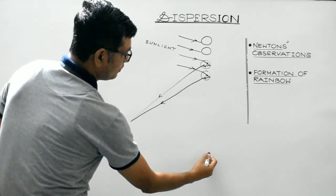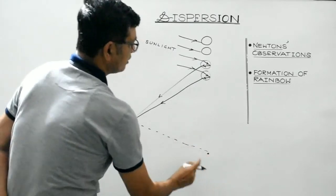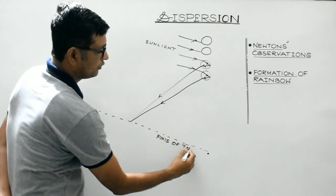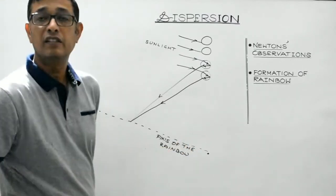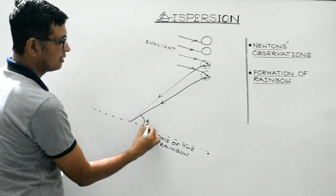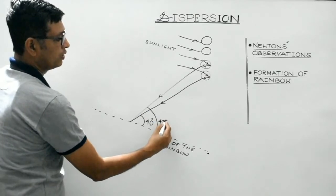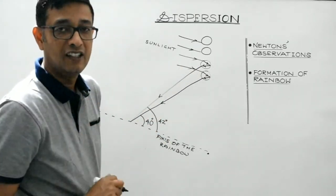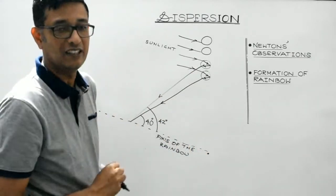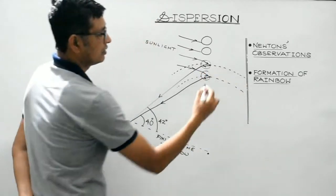This is the common centre of the rainbow, and this is the observer's eye. The line joining the common centre and the observer's eye with the sun is known as the axis of the rainbow. It is experimentally found that for the primary rainbow to be seen, the angle which the light entering the observer's eye makes with the axis of the rainbow should be between 40 and 42 degrees — an average angle of 41 degrees. This is the primary rainbow, which appears in the form of concentric coloured arcs.